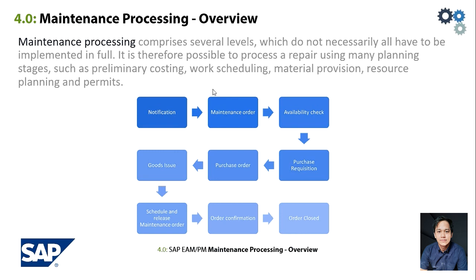Next is the maintenance processing overview. Maintenance processing comprises several levels which do not necessarily all have to be implemented in full — that will be based on client requirements. It is therefore possible to process a repair using many planning stages such as preliminary costing, work scheduling, material provision, resource planning, and permits.